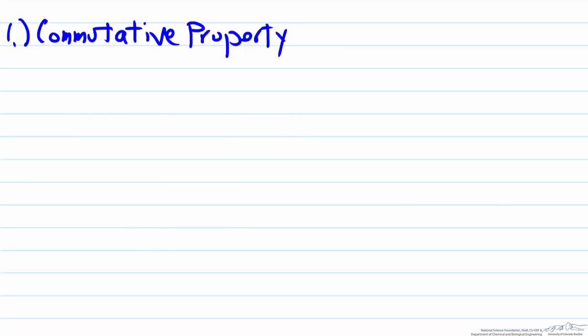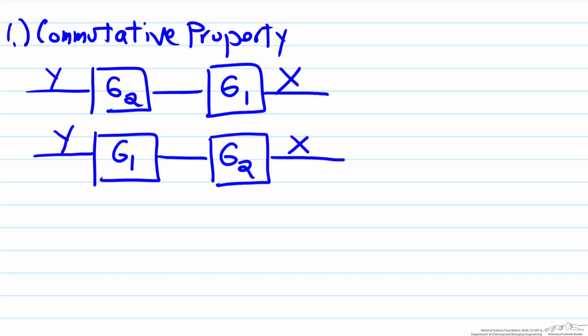The first rule of note is that block diagrams, like numbers, obey the commutative property. This means there is no mathematical difference between the following block diagrams. The first diagram shows that x equals y, the variable that comes in. Every time you go through a block it represents a multiplication, so you'll have y times g2.